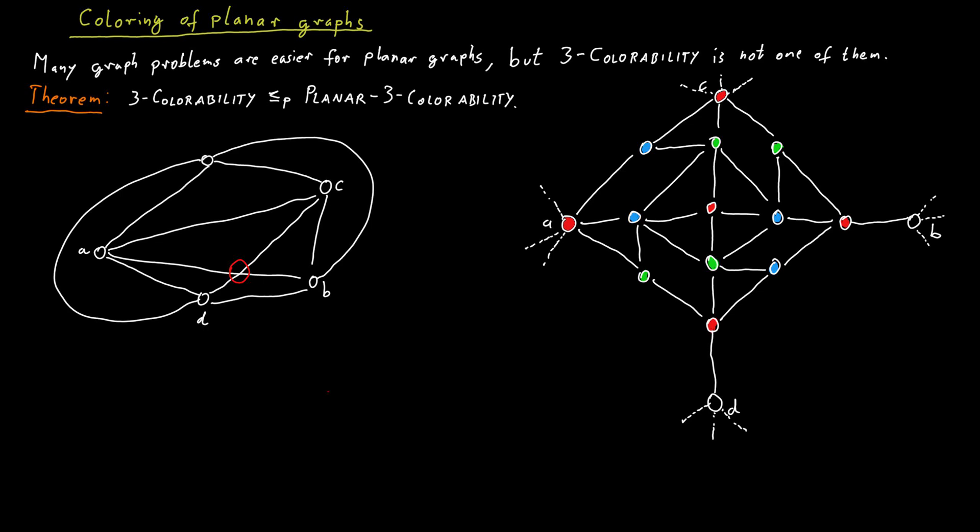We would also have to consider the case where the left vertex and the top vertex are indeed of a different color. So say one is red and the other one is blue. I will leave it as an exercise for you to verify that if you color this gadget in a valid way, the only option is to color the bottom vertex blue as well and the right vertex green as well.